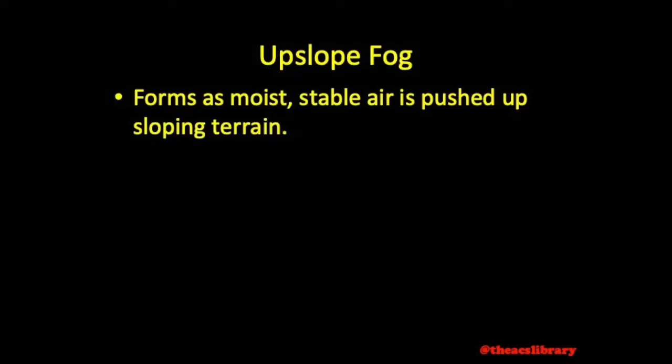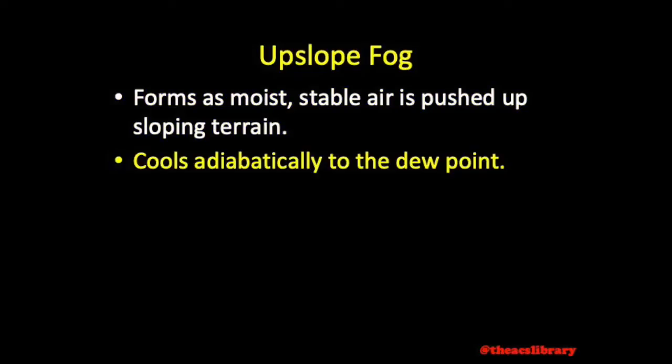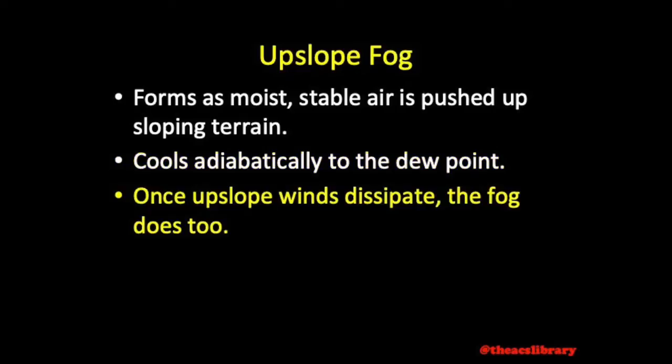Upslope fog is formed as moist stable air is pushed up sloping terrain, cooling adiabatically — with no heat energy transfer — to the dew point. Once the upslope wind dissipates, the fog does too.